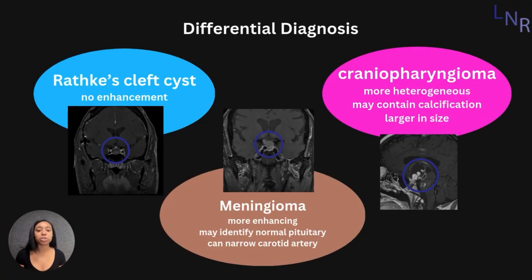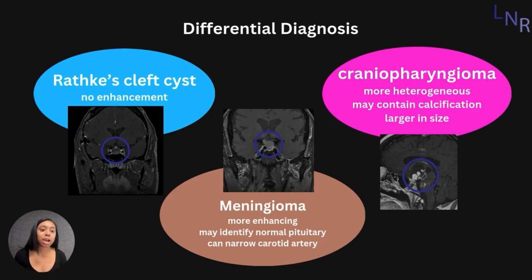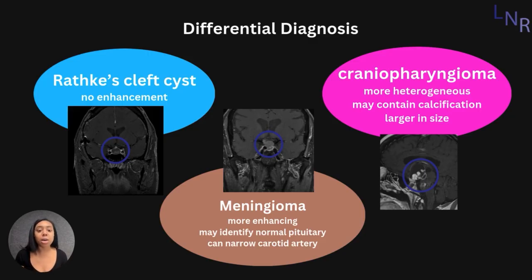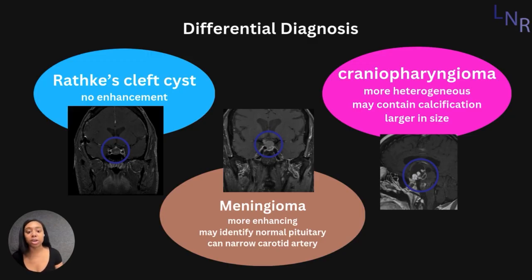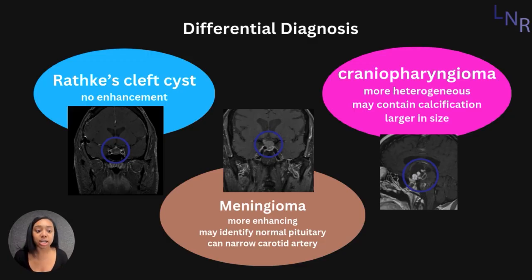Here are some pathologies that should be on your differential list when suspecting a pituitary adenoma. One would be a Rathke's cleft cyst; however, in these cases, you wouldn't see any enhancement at all. Another would be a meningioma. These would be more enhancing and could show a normal pituitary gland; however, you will also see narrowing of the carotid artery.